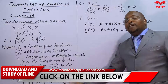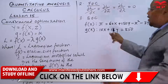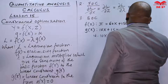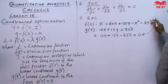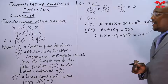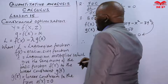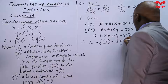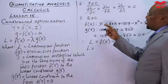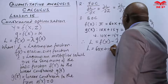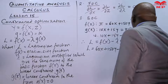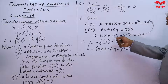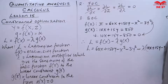The linear constraint must be expressed in the form equal to zero, so we transfer 850 to the left-hand side: 10x + 15y − 850 = 0. We then connect the two functions f(x) and g(x) using the Lagrange multiplier. The Lagrangian is L = f(x) − λ·g(x), which gives us L = (60x + 150y − x² − 3y²) − λ(10x + 15y − 850).